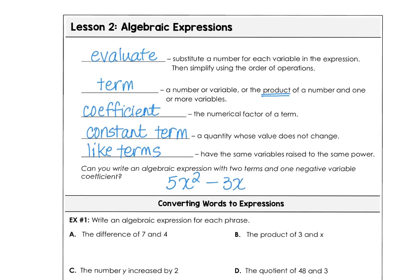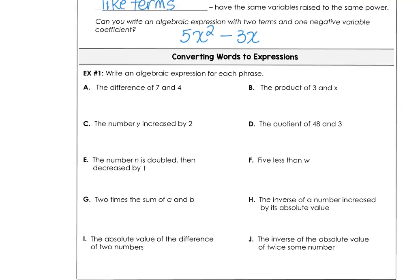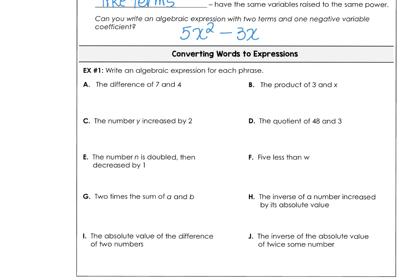In example 1, we want to write an algebraic expression for each verbal phrase. The difference of 7 and 4 means 7 minus 4. The product of 3 and x is when we multiply 3 times a number x. The number y increased by 2, increased means addition. So I'm adding 2 to the number y. The quotient of 48 and 3 means 48 divided by 3. Or you could write it horizontally, 48 divided by 3.